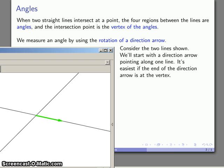Because what we're going to then do is rotate that direction arrow so that it measures out the angle. And the amount of rotation is going to correspond to what the angle measure is going to be.